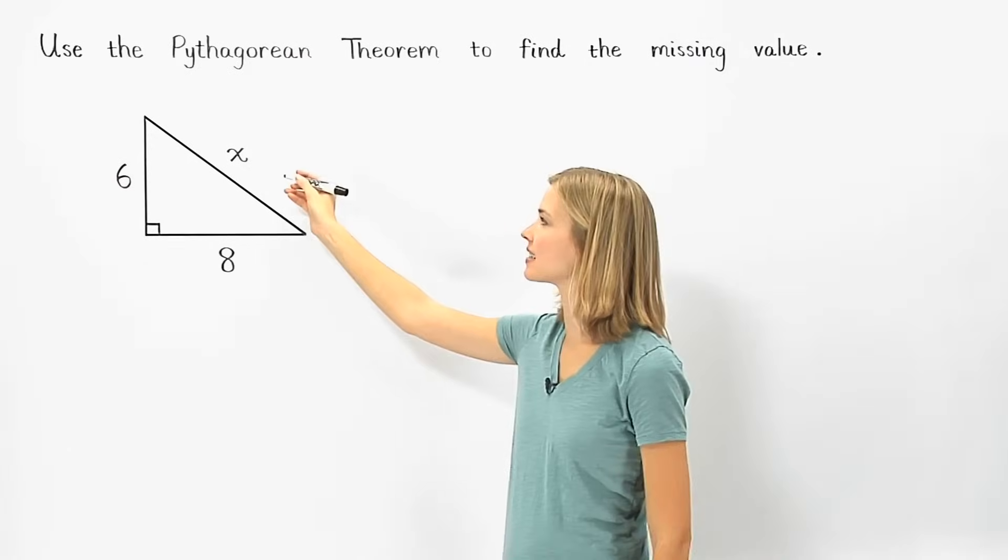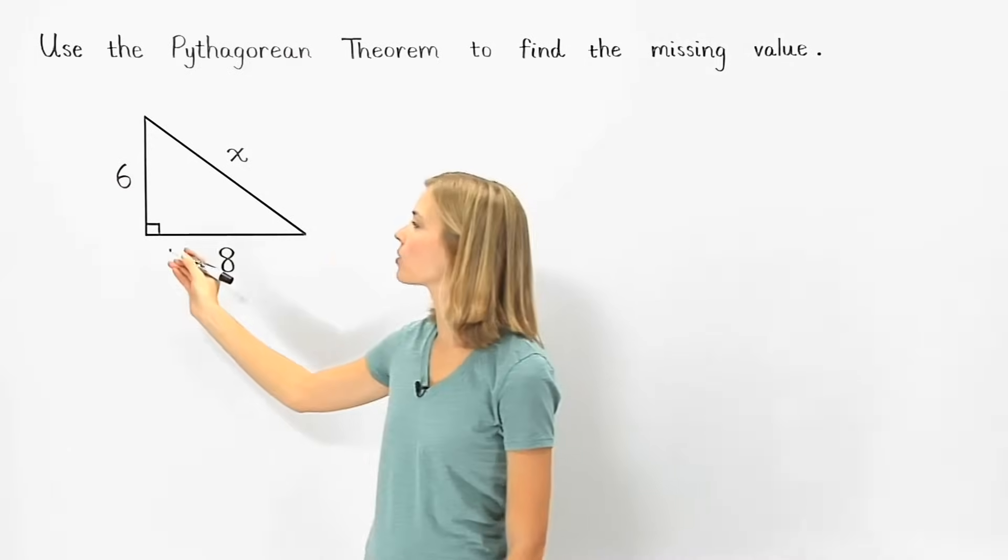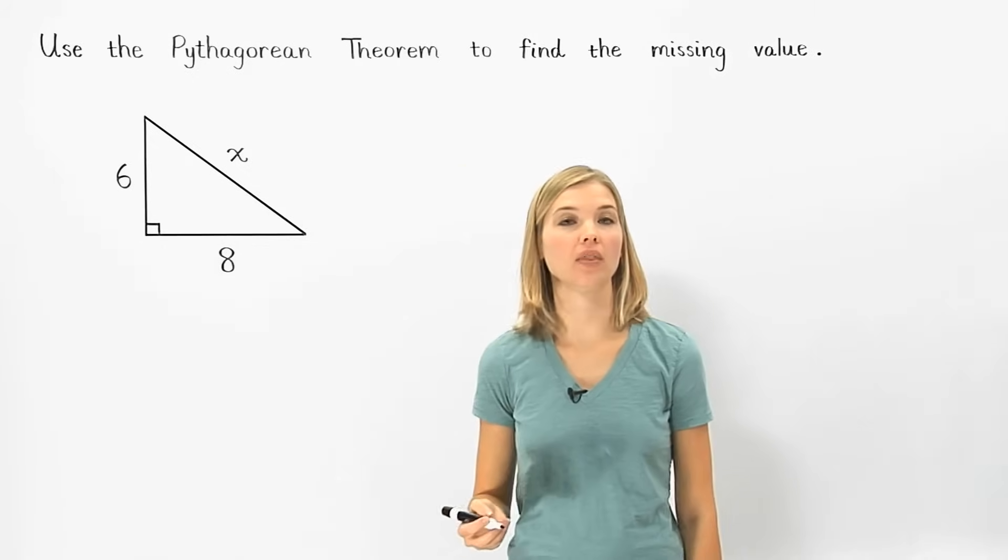To find the value of x in this example, notice that we have a right triangle, so we can use the Pythagorean Theorem.